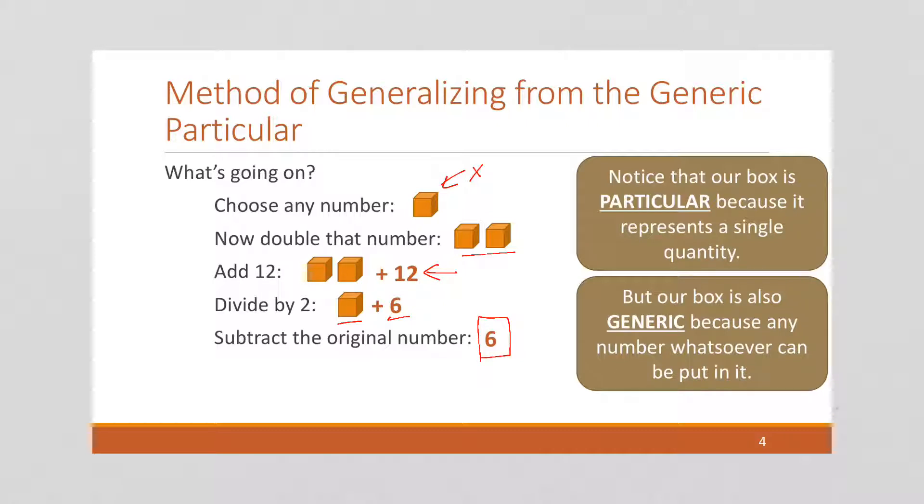This illustrates the method of generalizing from the generic particular. Because our box is particular, right? It represents some number. You had some number in your head. I don't know what number it is, but it was some number. It was a particular number representing a single quantity.